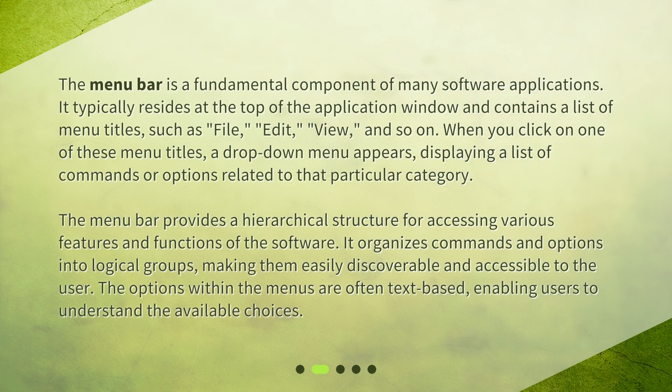The menu bar is a fundamental component of many software applications. It typically resides at the top of the application window and contains a list of menu titles such as File, Edit, View, and so on. When you click on one of these menu titles, a drop-down menu appears displaying a list of commands or options related to that particular category.